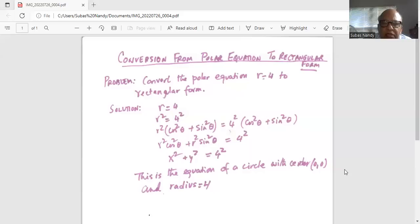Now the trigonometric identity we know cosine squared theta plus sine squared theta is one. Hence we have r squared cosine squared theta which is x in rectangular system, x squared, plus r squared sine squared theta which is y in rectangular coordinate system. So x squared plus y squared equal to four squared.